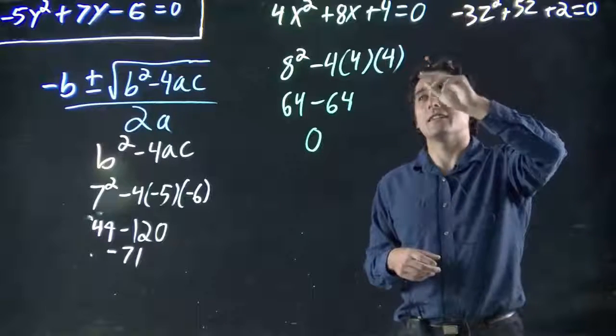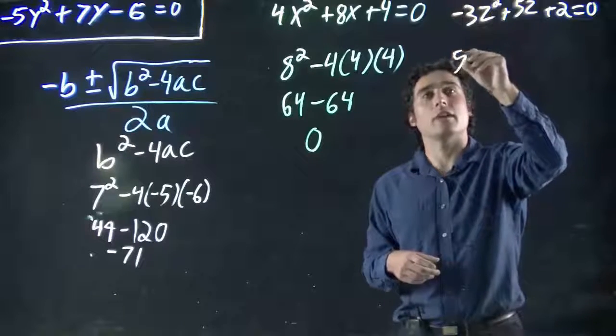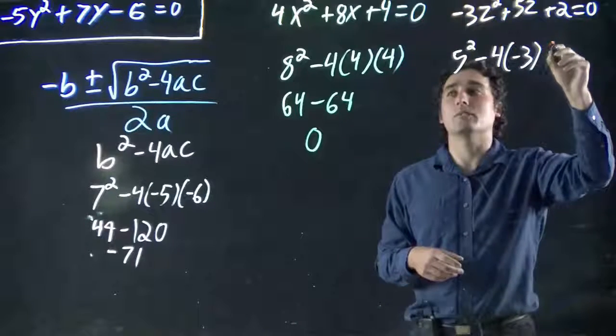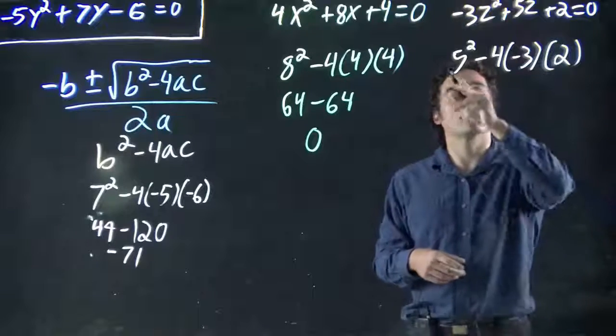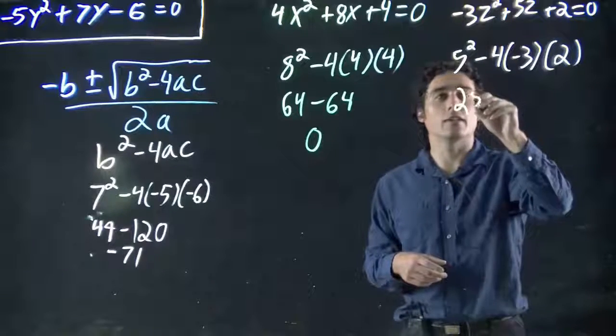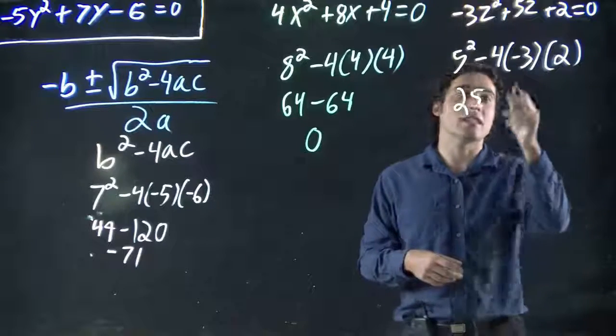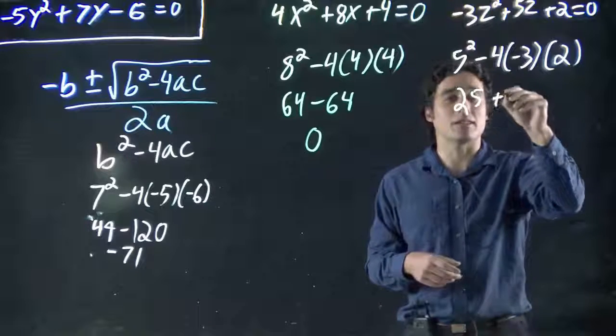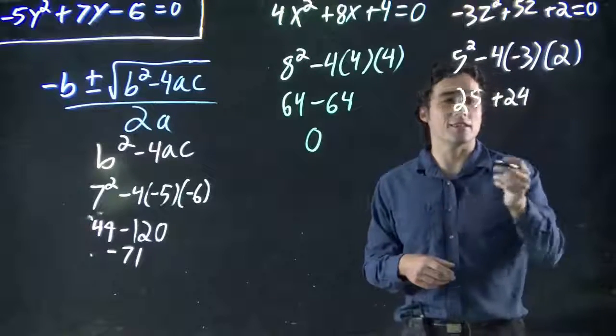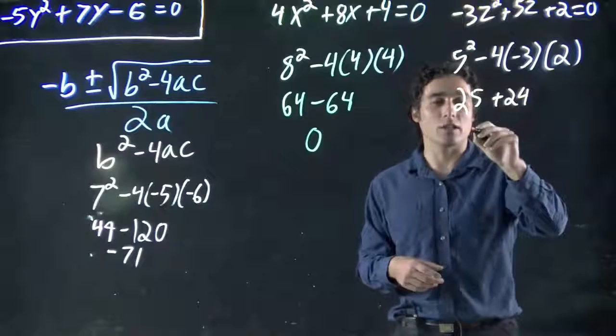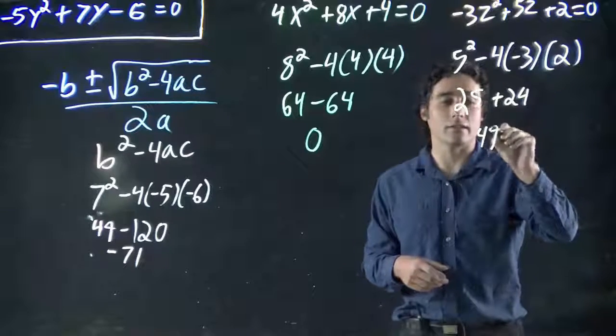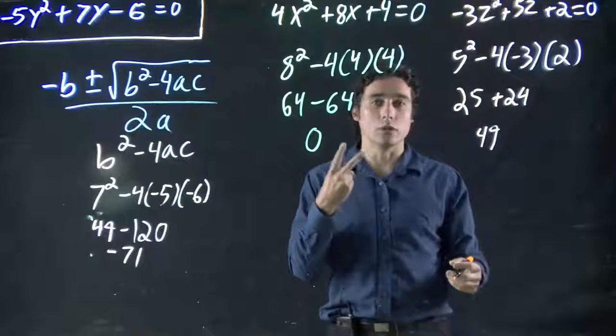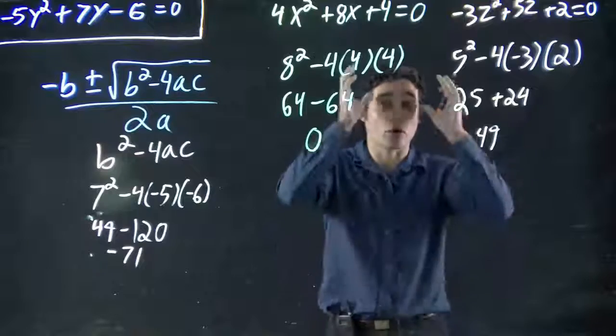In this case again, minus 3z squared plus 5z plus 2 equals 0. So our b term is 5. 5 squared minus 4 times a which is minus 3 times c which is 2. So we get 25 minus 4 times minus 3 is minus 12 times 2 is minus 24. And a minus and a minus makes a plus. I hedged my bets here. I wanted to make sure I'd get a positive number. 25 plus 24 is 49. If I get a positive number it means there is two roots.